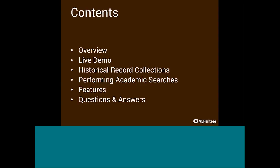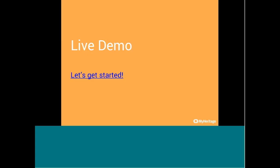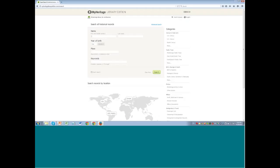Then I'll go into more of an explanation of the different types of record collections that we have, give some tips for performing academic searches, and then finally do an overview of the features and open it up for questions and answers. Please feel free to put questions in the chat box as I'm talking, and we will get back to them at the end.